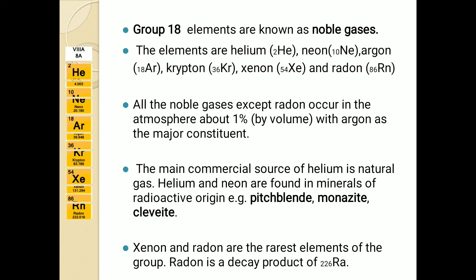The 18th group elements are called noble gases, as they all exist in nature in the gaseous state. They are called noble or inert because they exist in a monoatomic state and do not combine with any other element, as their outermost shell is completely filled. The elements are helium, neon, argon, krypton, xenon, and radon. In nature they occur in the atmosphere — about 1% by volume — with argon as the major constituent. The main commercial source of helium is natural gas. Helium and neon are also found in minerals of radioactive origin like pitchblende, monazite, and cleveite. Xenon and radon are the rarest; radon is a decay product of radium.